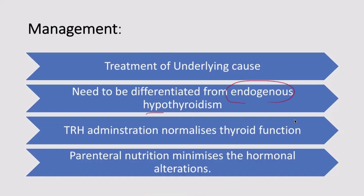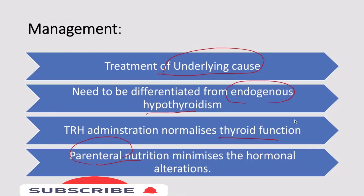We do not need to over-treat this condition; we need to differentiate it from endogenous hypothyroidism. Treatment of the underlying cause is important. TRH (thyrotropin-releasing hormone) administration may stimulate the pituitary-thyroid axis and normalize thyroid function. Early parenteral nutrition minimizes hormonal alteration and helps bring deranged hormone levels back to normal.